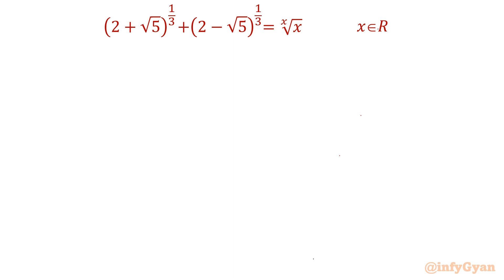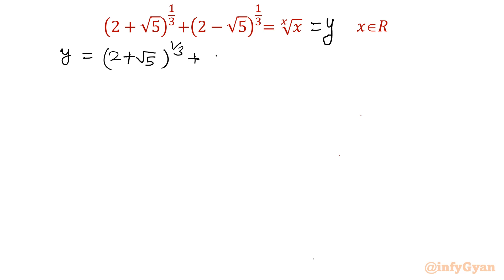While solving this problem I will use exponent properties and identities mainly, and then we will conclude our result using a few manipulations. I will consider the given expression equal to y. So y equals (2 + √5)^(1/3) plus (2 − √5)^(1/3).